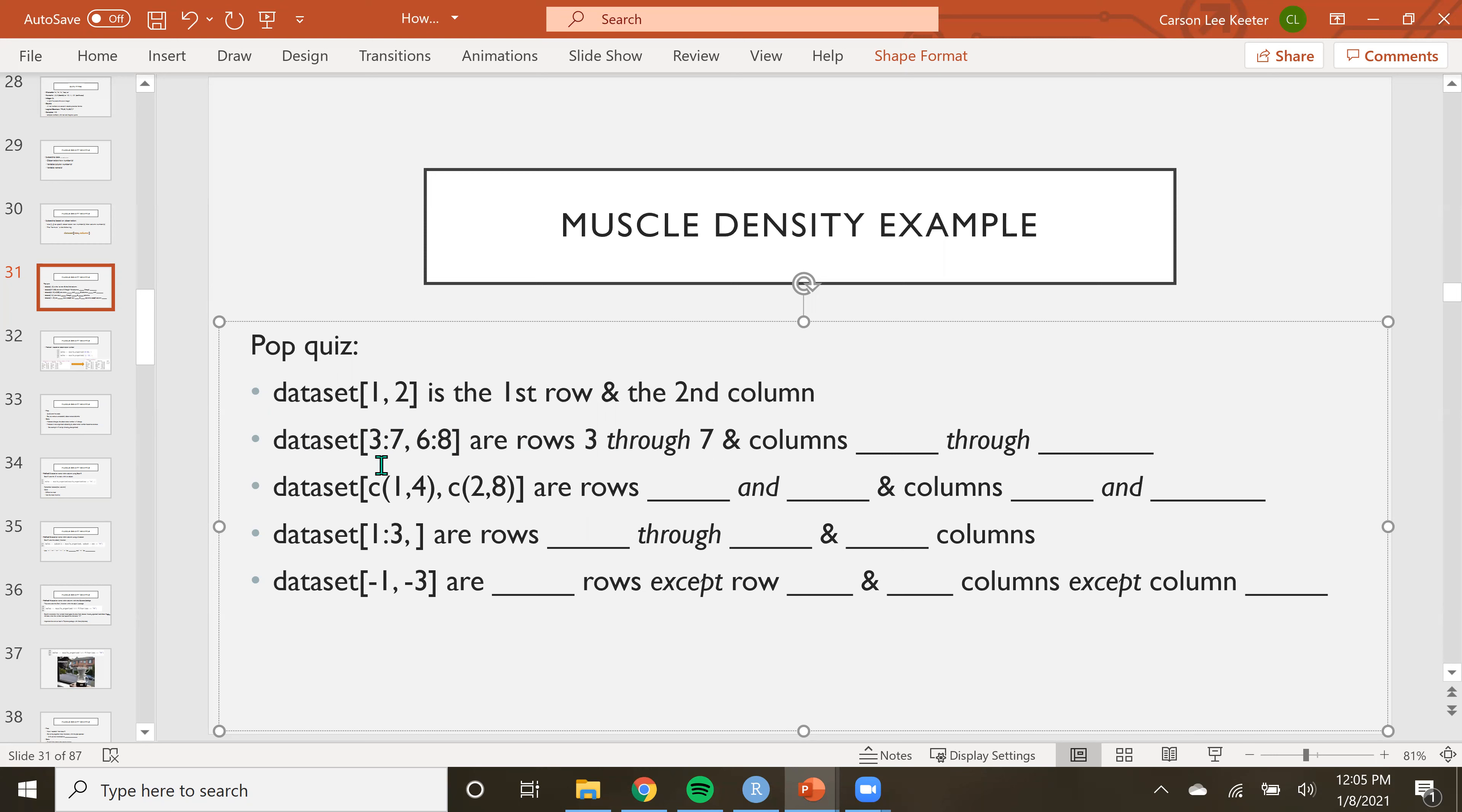So you're not grabbing just four or five and six. We're grabbing three, four, five, six, and seven. Same concept here where we just want to grab column six through eight.